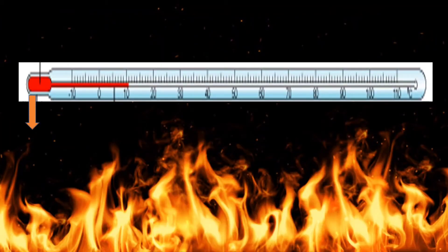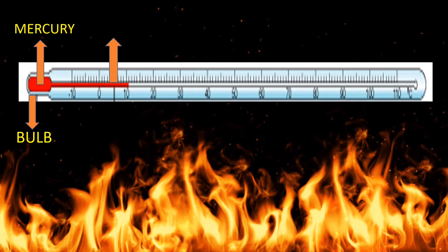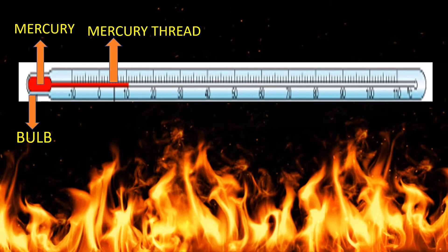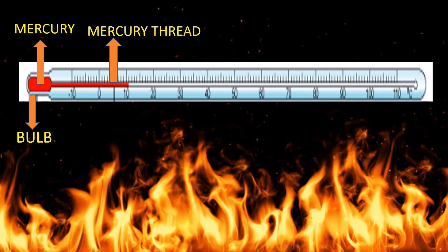Let us check the structure of the laboratory thermometer. It has a bulb at one end, and in that bulb it has mercury, which is responsible for showing the temperature. Next is the mercury thread, which rises up or falls down according to the temperature of the object.